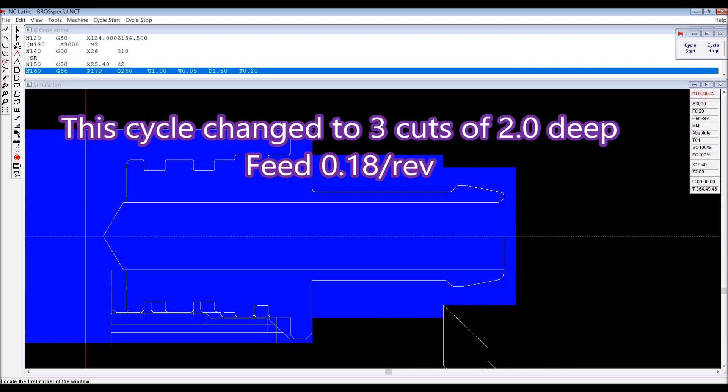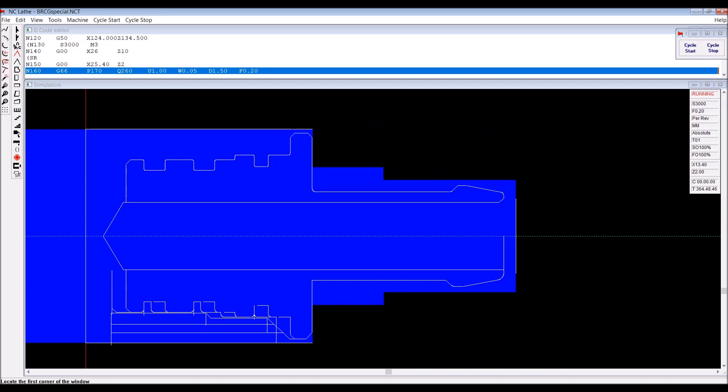As you can see, that takes four cuts there. I ended up changing that to three cuts, two mil deep and 0.18 feed, and it removed the material quite nicely.